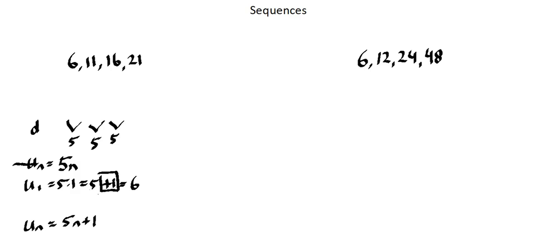So I've tested the general rule 5n. That doesn't work. I'm not getting my sequence. The results of using the general term 5n are always too small by a value of 1. So I need to adjust my general rule to 5n plus 1.